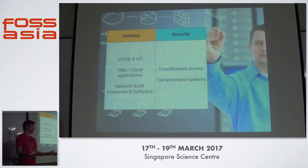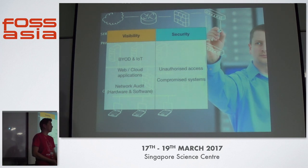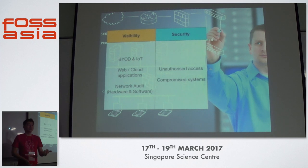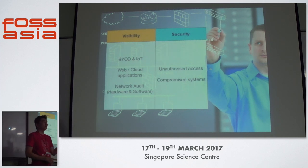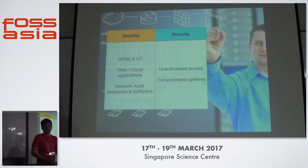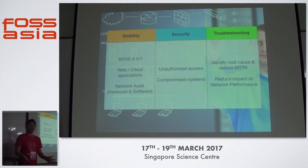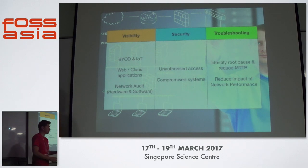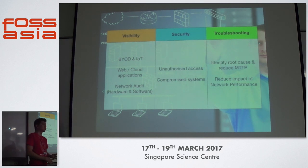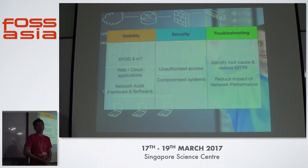The second category is security. Before this talk there was a talk about honeypots. Unauthorized access to your network and compromised systems are real concerns — you don't want your web camera to be part of a botnet. You need insights to understand if your systems are properly secured and nobody is accessing them without authorization. Finally, there's troubleshooting. If I have a problem with my network, I need to find the root cause so I can reduce the mean time to resolution and reduce the impact on business or user experience.